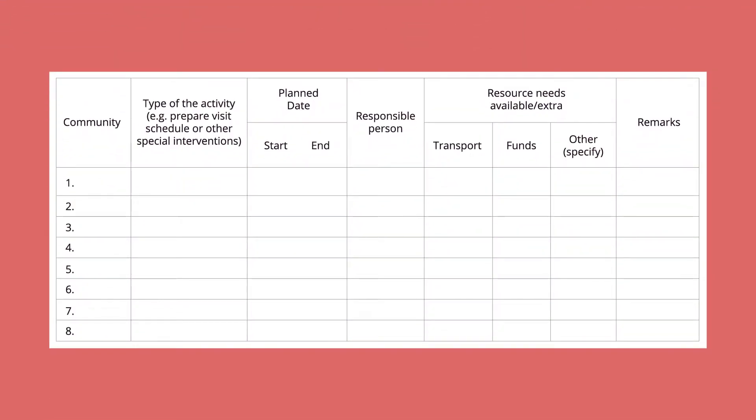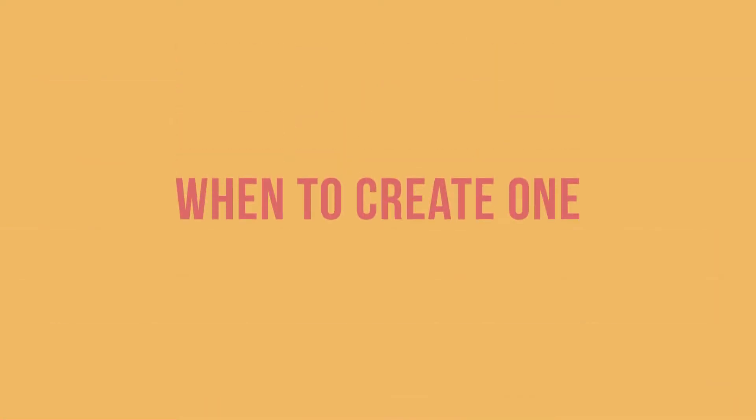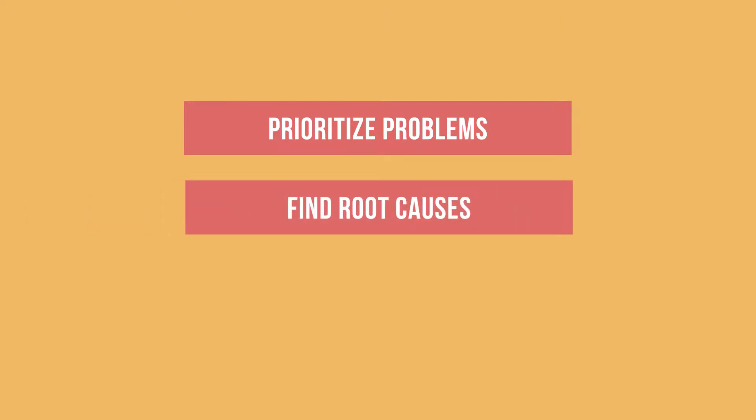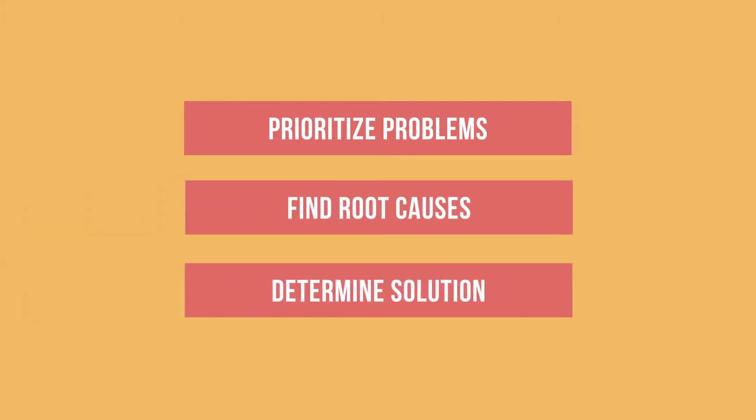Here is an example of an action plan not yet filled out. The time to create an action plan is after you have identified and discussed your facility's biggest performance problems during an annual performance review, periodic review meeting, or supervisory visit. Once you have prioritized problems, found the root causes, and determined solutions, you can create an action plan.